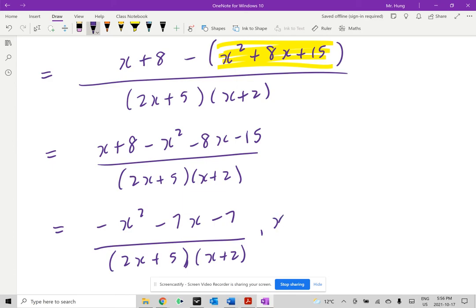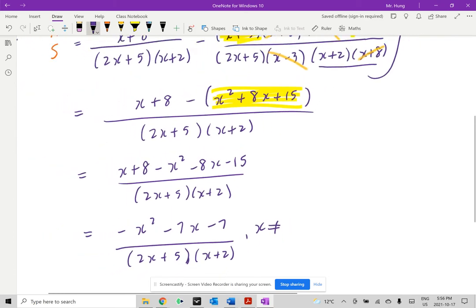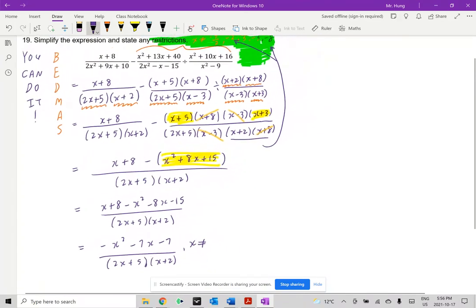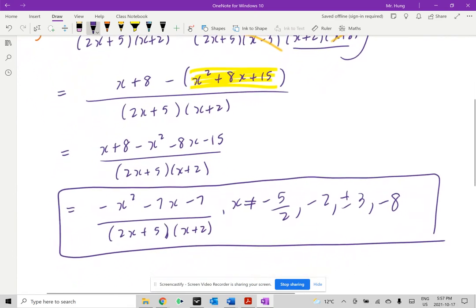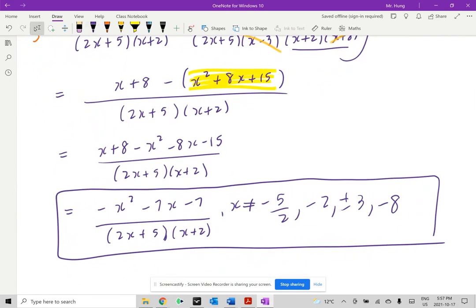Don't forget the restrictions that we wrote from the beginning. So I'm going to zoom out for a moment. Write down everything that we did from the beginning here. x can't be negative 5 divided by 2, negative 2, plus and minus 3, and negative 8. And I'll put a box around this. This is how you simplify the expression and state any restrictions.